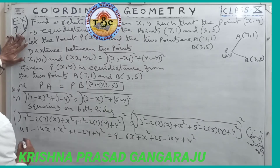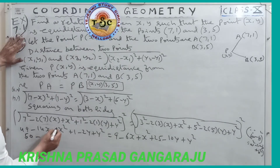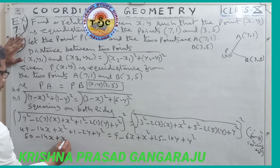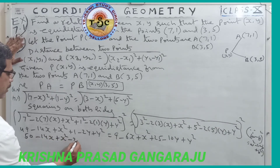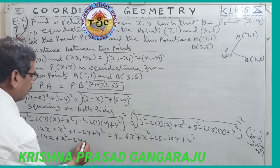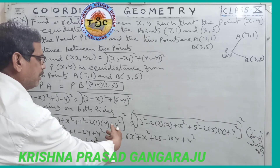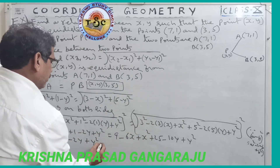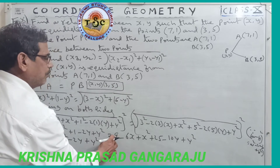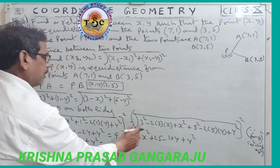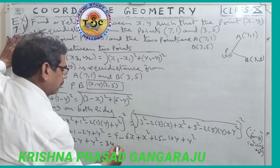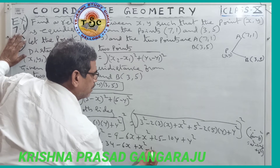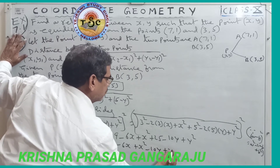On the left side: 49 plus 1 is 50, so we get 50 minus 14x plus x² minus 2y plus y². On the right side: 9 plus 25 is 34, giving 34 minus 6x plus x² minus 10y plus y².